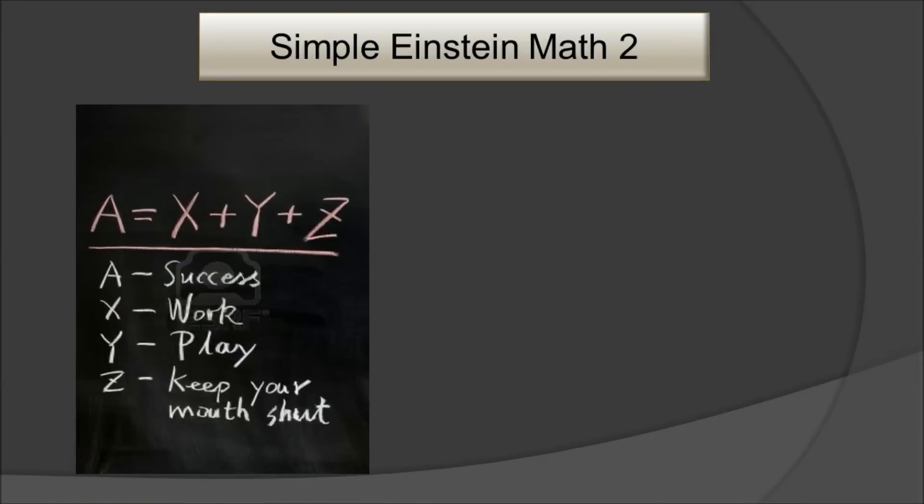Now for the second one: the success formula of Einstein. A is success. X, Y, Z are defined as such. So then success is going to consist of work plus play plus keep your mouth shut. Working hard contributes to success, understandable. Play, because the more you enjoy, the more productive you will be.